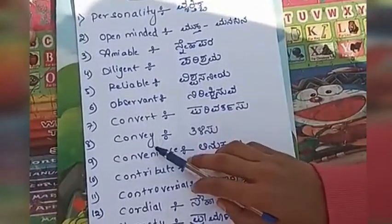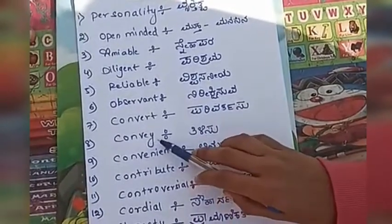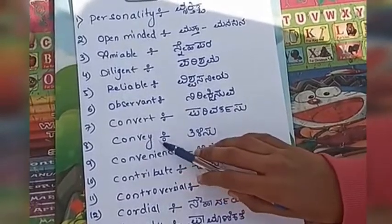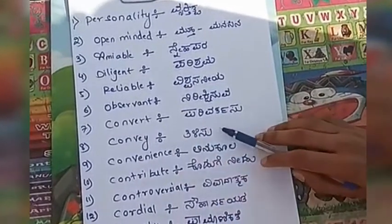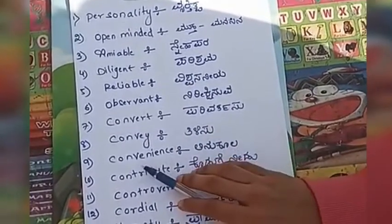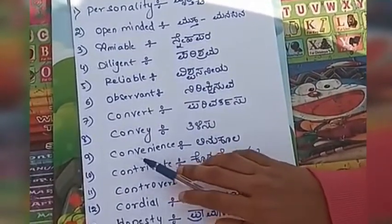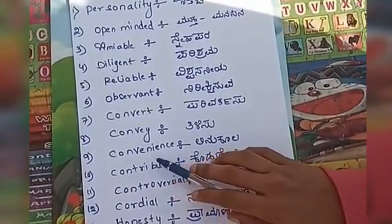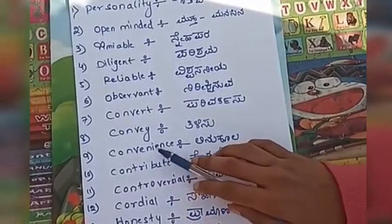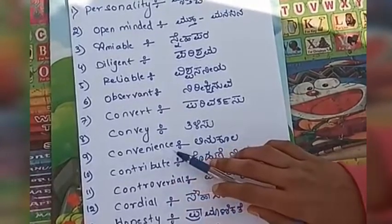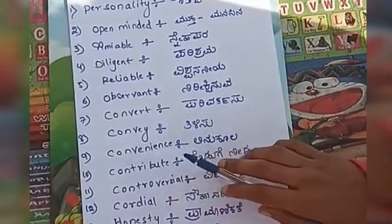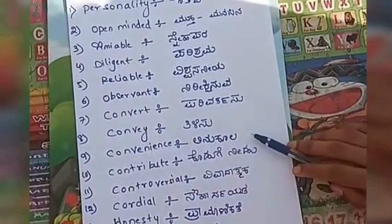Convey, C-O-N-V-E-Y, convey — tidiiswa. Convenience, C-O-N-V-E-N-I-E-N-C-E, convenience — anukula.